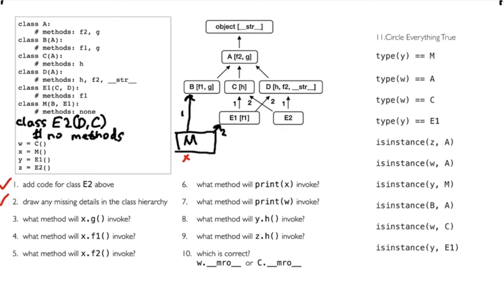It turns out there's an algorithm for determining this — it's called the C3 algorithm. There's a paper about it, which is actually horribly difficult to read. What I want to do is lay out three rules so you can intuit and figure out in the common cases which method will be called. This gets very complicated, and for this reason some programming languages don't even have multiple inheritance — every type can have at most one parent. Python has this complexity, so we're going to think about it in this lecture.